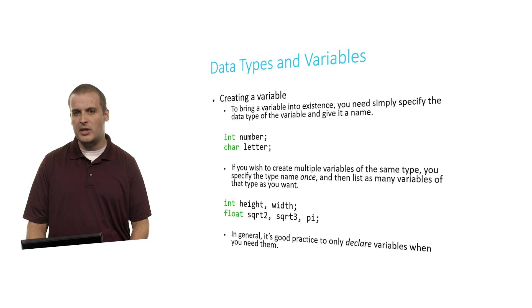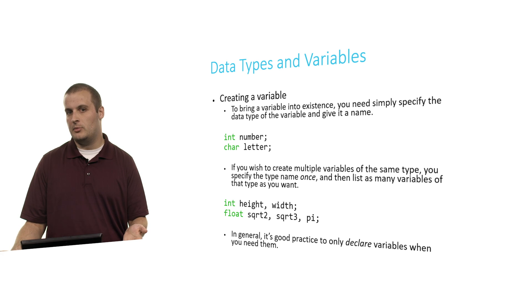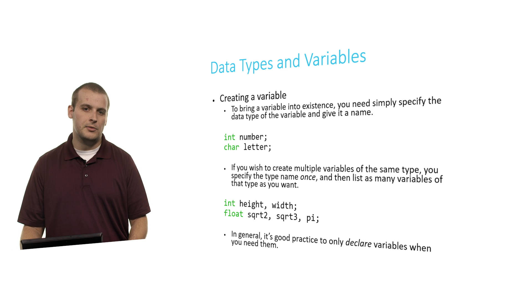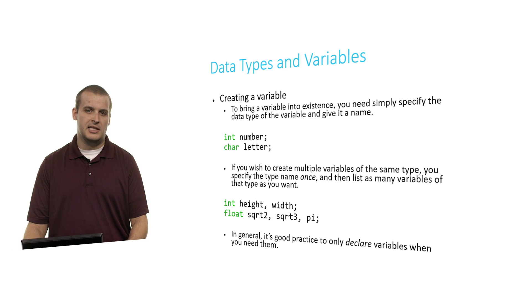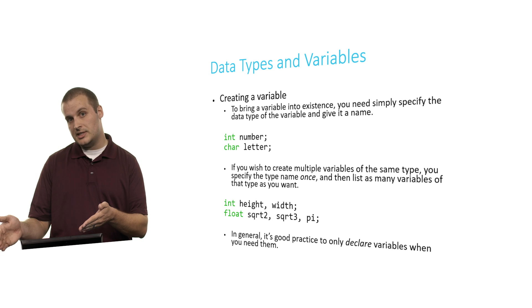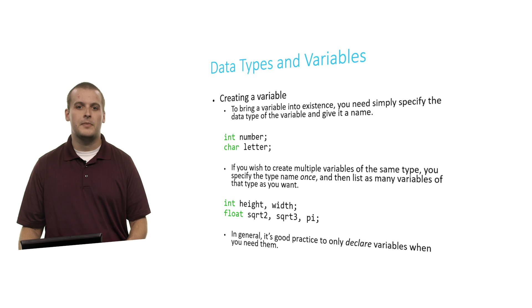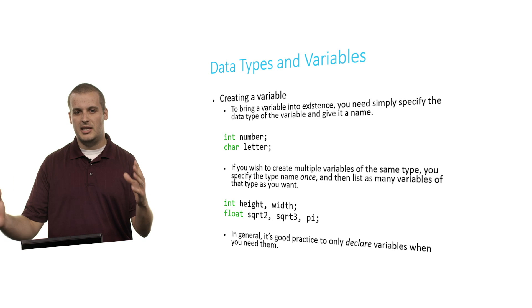Similarly, you can create three floating point values at once: 'float squareRoot2, squareRoot3, pi;' rather than three separate lines. In general, it's good design to only declare a variable when you need it — we'll talk more about that when we discuss scope. So you don't necessarily need to create all your variables at the beginning of the program, which was a common practice many years ago when working with C. You might just want to create a variable right when you need it.